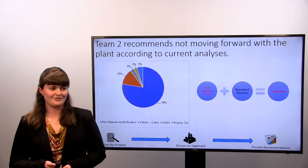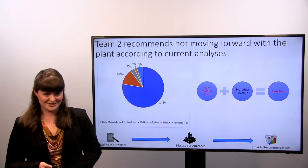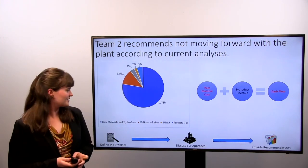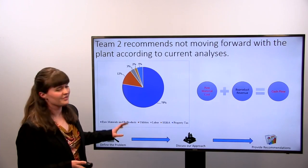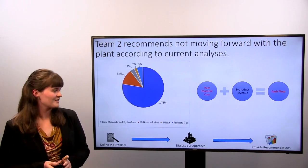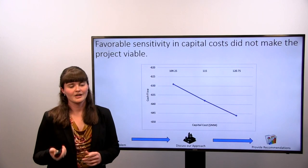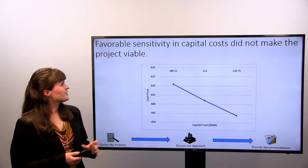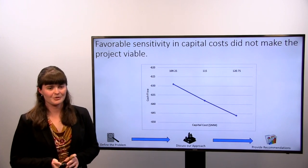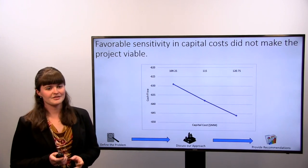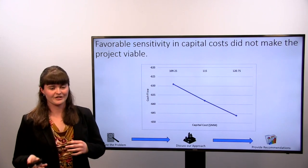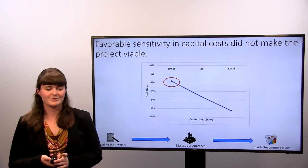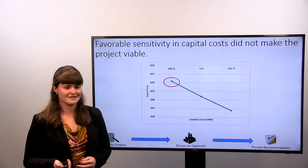Based on the information presented, Team 2 recommends not moving forward with production of this plant. A pie chart shows that 78% of costs are in raw materials and byproducts, and even with sellable byproducts offsetting raw material costs, we have not made enough money to make this plant viable. We performed sensitivity analyses starting with capital costs — increasing or decreasing by 5% — but even our best case of decreasing capital costs by 5% still yields such a negative cash flow that the plant is not viable.